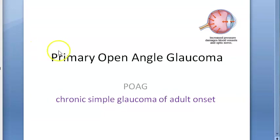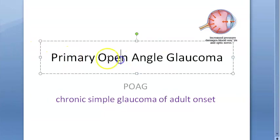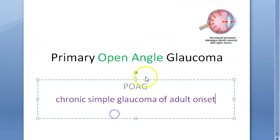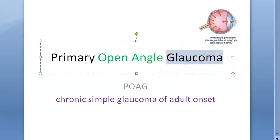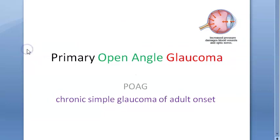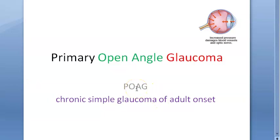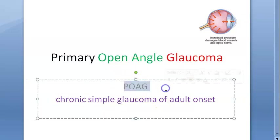In this video, let us look at primary open angle glaucoma. The angle is open here — it is glaucoma, but the angle is open. It is primary, meaning there is no other secondary cause which is systemic or other ocular causes. It is also called POAG.